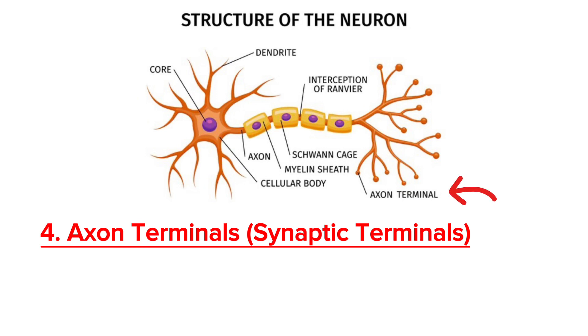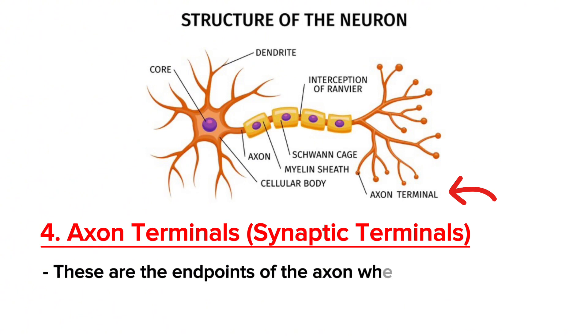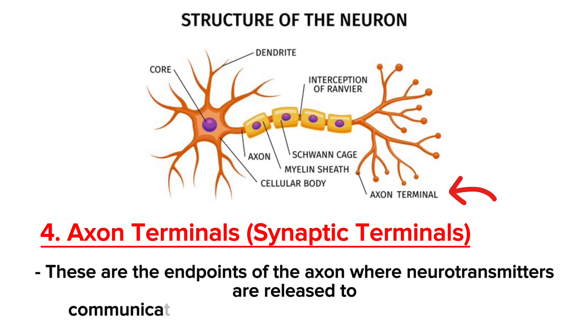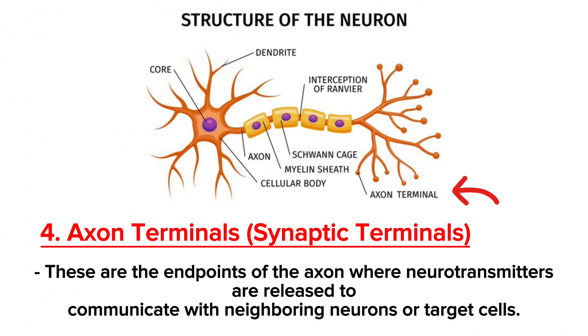Axon terminals are the endpoints of the axon where neurotransmitters are released to communicate with neighboring neurons or target cells.